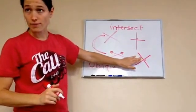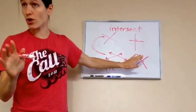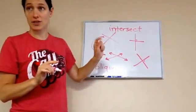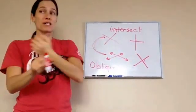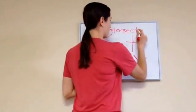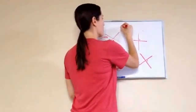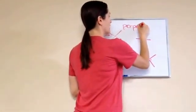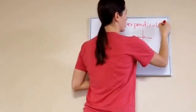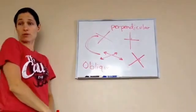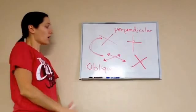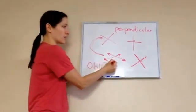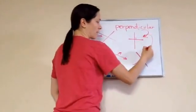And if they have a perfect corner, it's called perpendicular. Perfect, perpendicular. So I'm gonna write that word down. Perpendicular. You might want to write these words down.